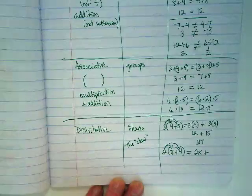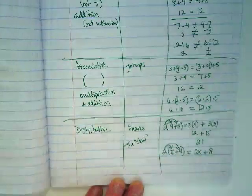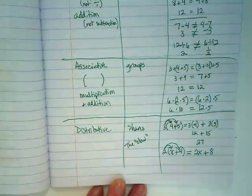2×x is 2x, plus 2×4 is 8. That's it, the problem is finished: 2x+8.